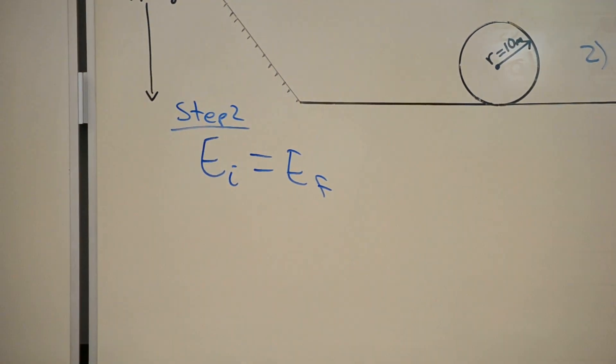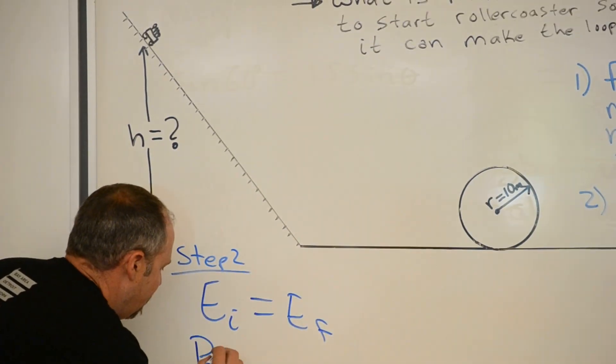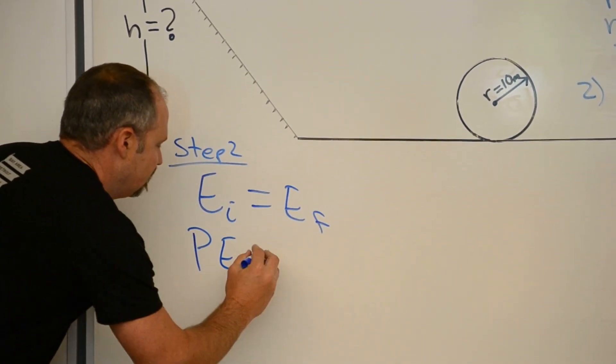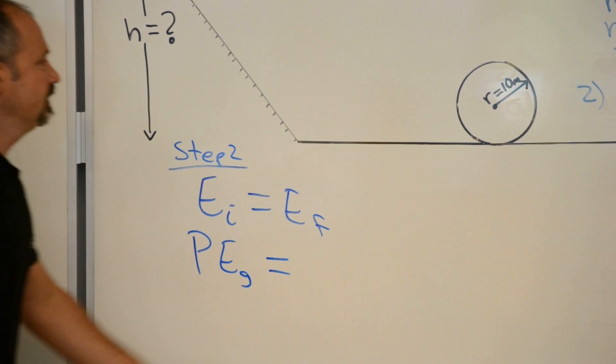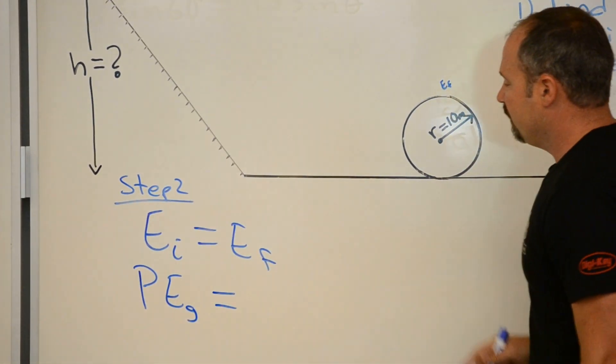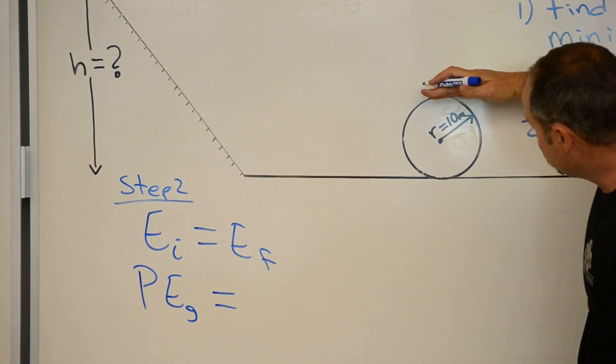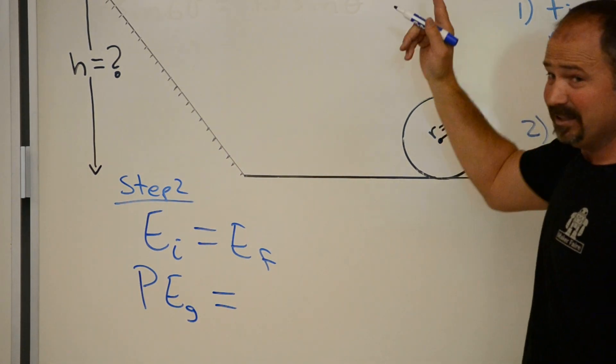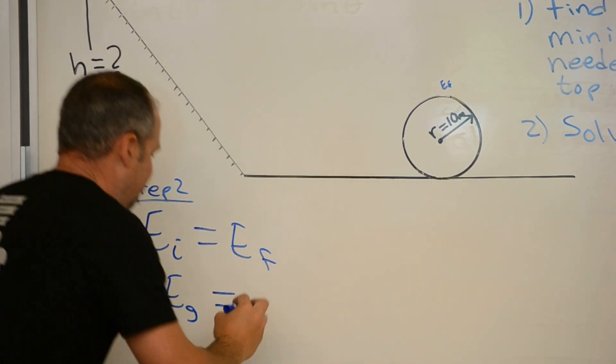What is the initial energy? The roller coaster starts here, not moving, so all of the energy is potential energy of gravity. And then, this is our final situation, here at the top of the loop. Here we have both potential energy of gravity and it's moving, so we also have kinetic energy.